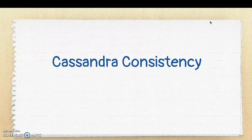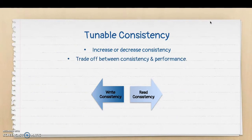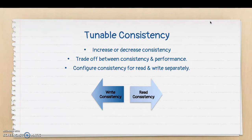In this video, we will talk about Cassandra Consistency. As we said earlier, Cassandra has tunable consistency — it means we can increase or decrease the consistency level. But doing so comes with a performance impact. Also, we can configure the consistency for read and write operations separately.